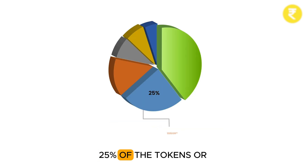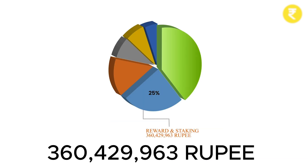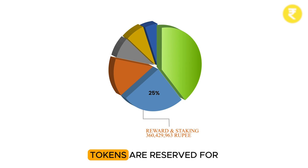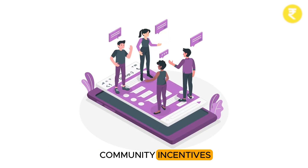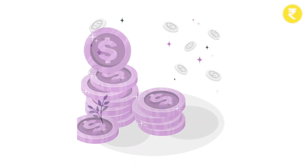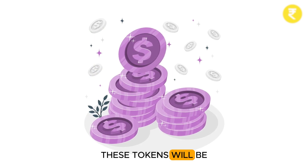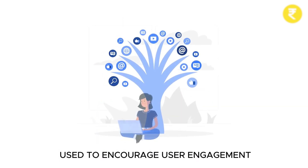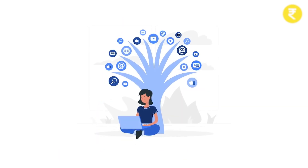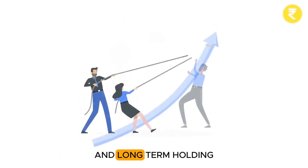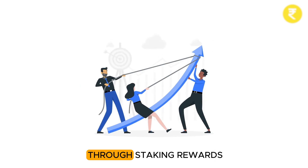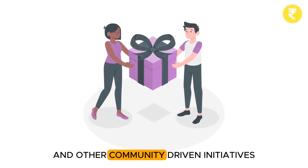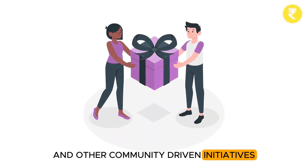25% of the tokens, or 360,429,963 rupee tokens, are reserved for community incentives. These tokens will be used to encourage user engagement, liquidity provision, and long-term holding through staking rewards and other community-driven initiatives.